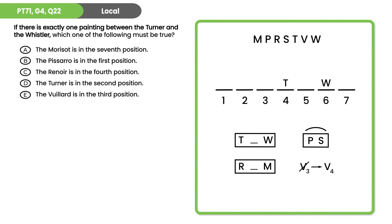Any answer choice not matching this hypothetical doesn't have to be true and can be eliminated as a counterexample. Answer choice A says M is in seventh — we have that, so keep it. B says P is first — it could be second instead, eliminate B. C says R is fourth — it could be fifth, eliminate C. D says T is second — it could be fourth, eliminate D. E says V is third — we have that, so hold A and E and see if we can find counterexamples to either.